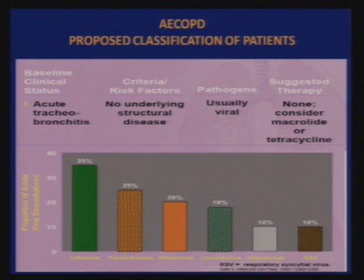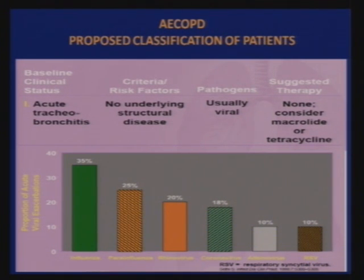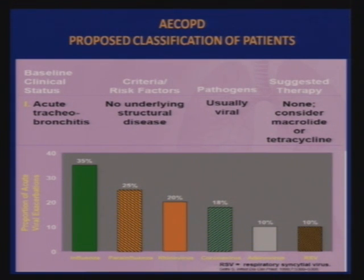A classification based on disease stage and infective agent guides antibiotic therapy. In Stage 1 — acute tracheobronchitis with no underlying structural disease — the pathogen is commonly viral: influenza at 35 percent, parainfluenza at 25 percent, and rhinovirus at 20 percent, accounting for nearly 80 percent; other minor agents include coronavirus, adenovirus, and RSV. No antibiotic is needed for these patients, though a macrolide or tetracycline has been suggested in some studies.